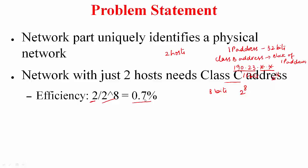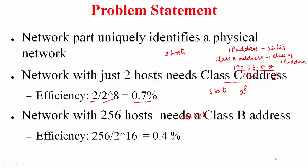What if you have a network with 256 hosts, what class address will you give and what is the efficiency of the address space? Well, you need to give a class B address because class C will not support this, and here you can potentially support 2 to the power of 16 hosts but you are only using 256 host addresses. So the efficiency is even worse, only 0.4 percent.